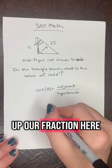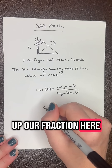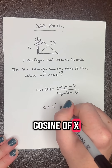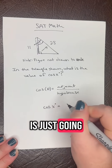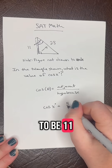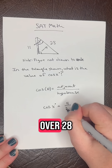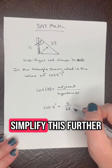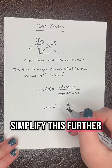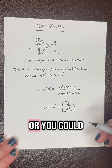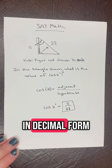So we set up our fraction here: cosine of x is just going to be 11 over 28. We can simplify this further — this is going to be our answer, or you could also write it in decimal form.